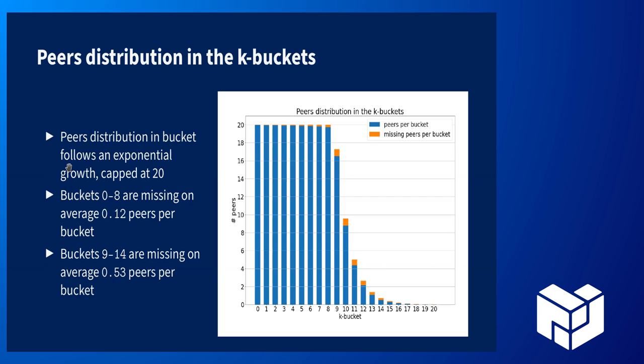When we look at the number of missing peers for each bucket — defined as cases where a bucket is not full and there exists a peer in the network that would fit the bucket but is not present — the missing peers rate for full buckets is very low: 0.12 out of 20 peers. It's a bit higher for higher ID buckets, but again, still very acceptable.